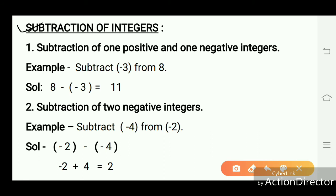Subtraction of integers: case one — subtraction of one positive and one negative integer. Example: subtract minus three from eight. When we subtract eight minus minus three, we get eleven, because minus minus is plus. So eight plus three equals eleven.